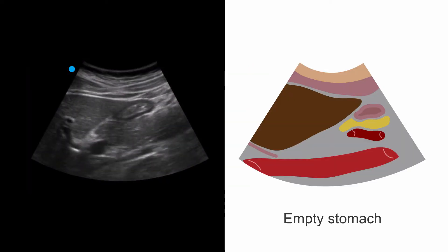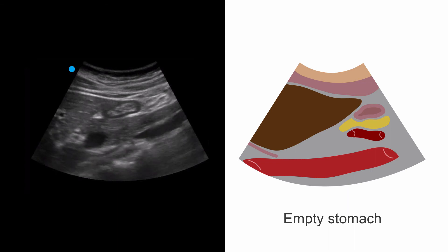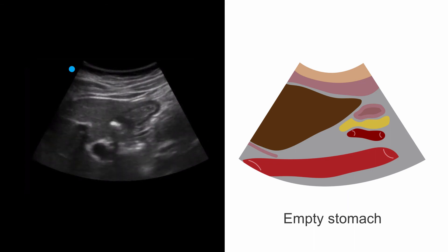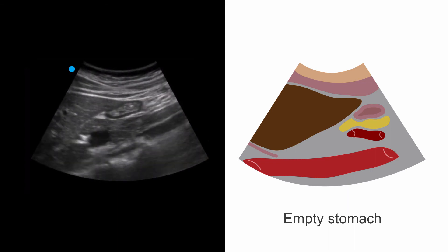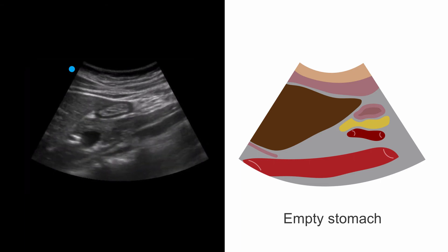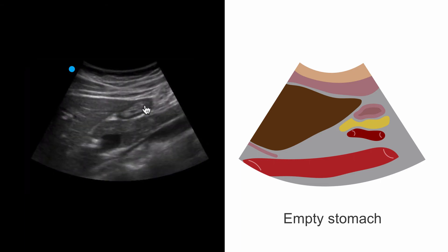Our goal here is to examine the antrum to look for gastric content. An empty stomach will have a collapsed antrum where the anterior and posterior surfaces are in direct contact, as we see here.